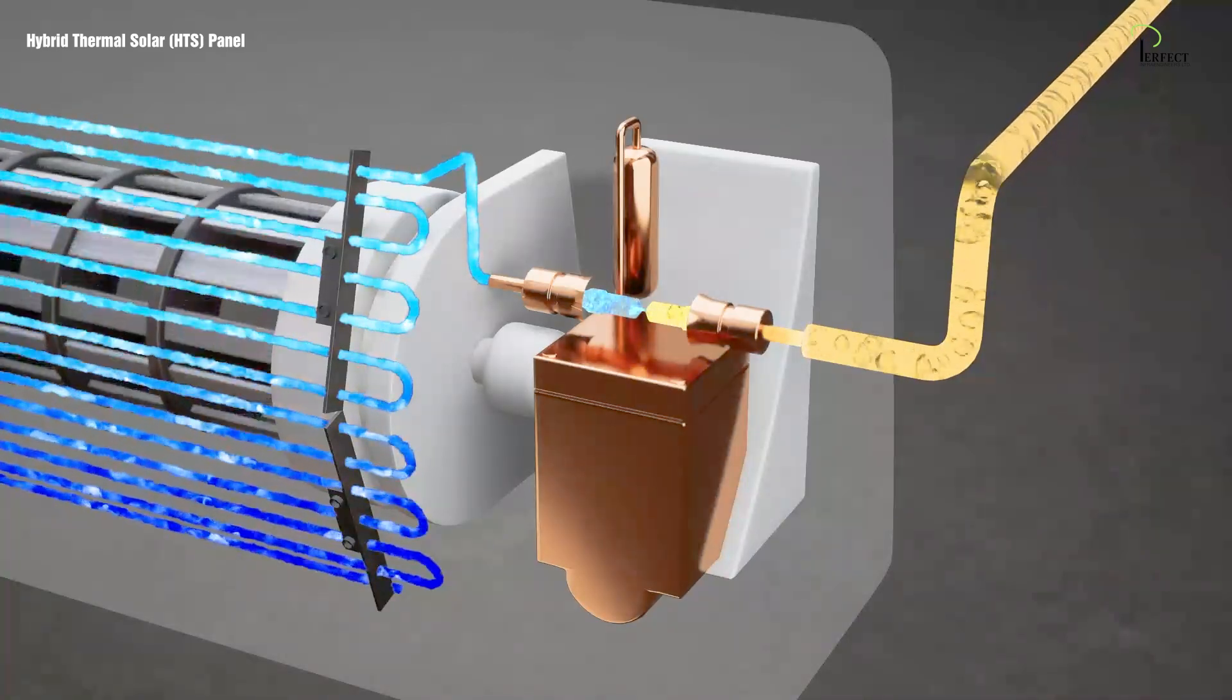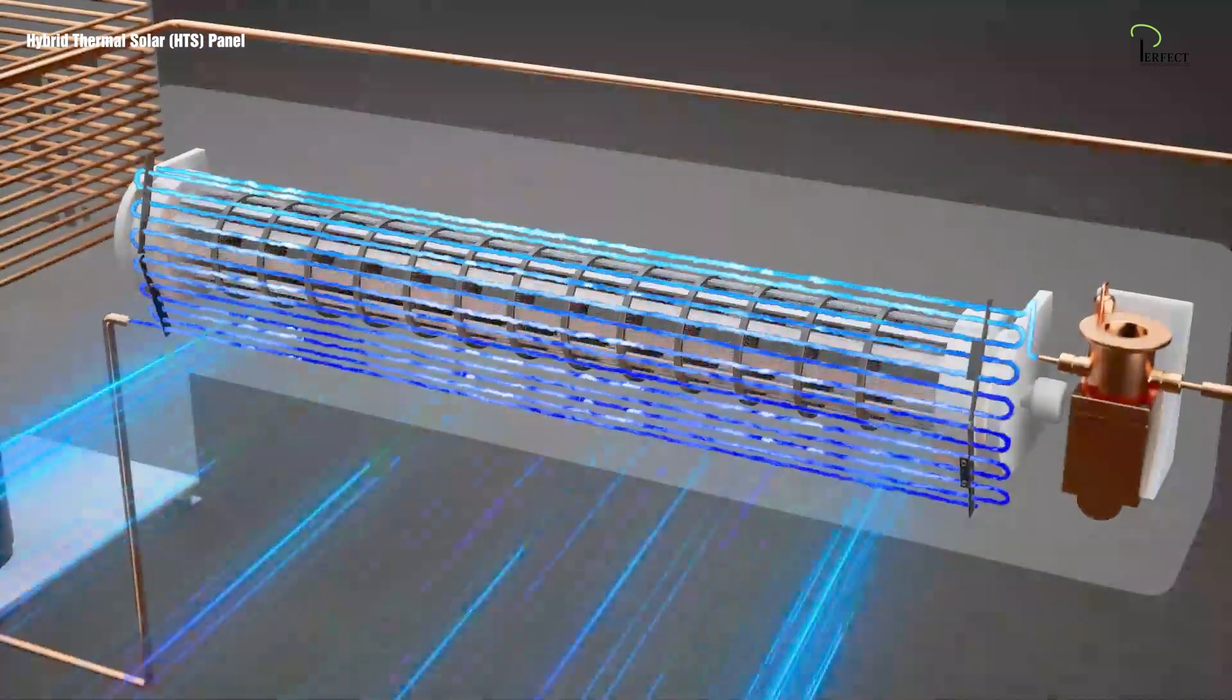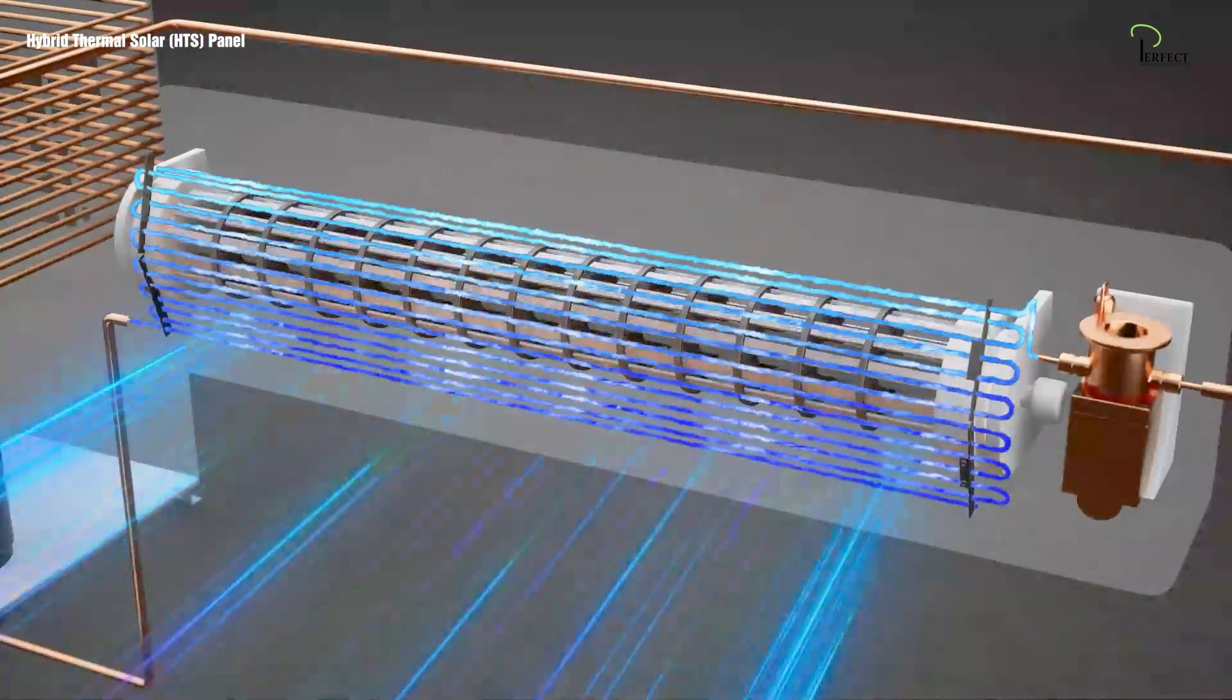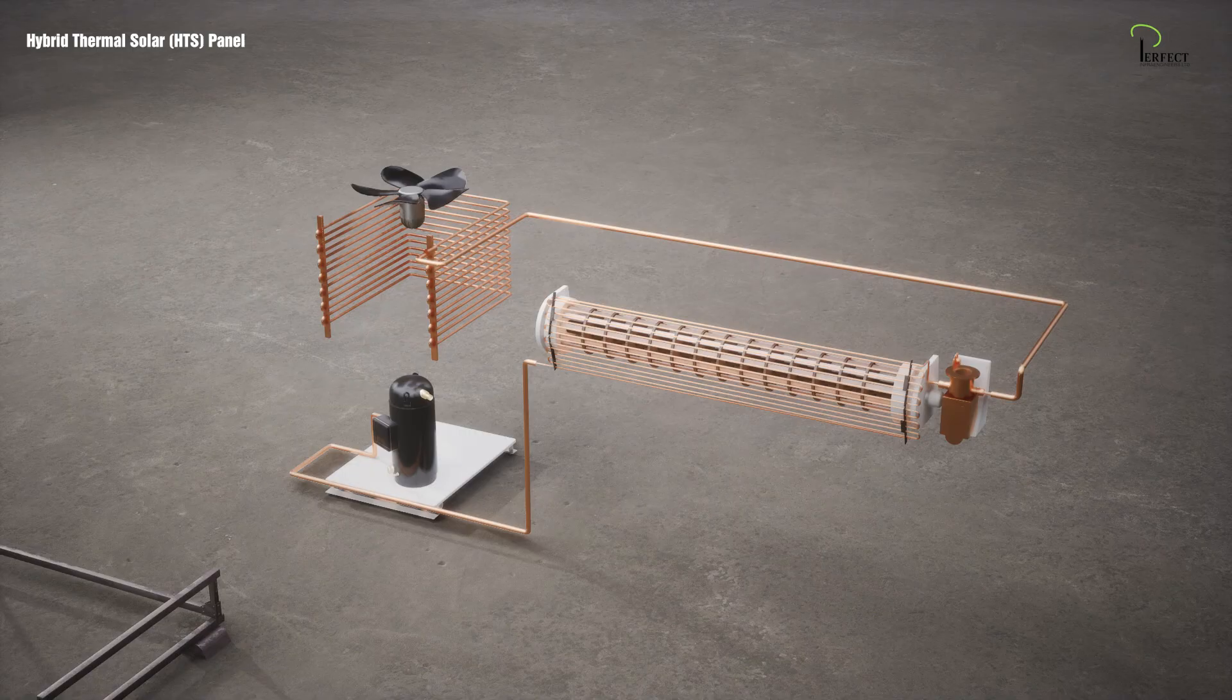Once the refrigerant reaches the inside unit of your air conditioner, the room's air passes over the copper pipes cooled by this refrigerant, cools down, and blows out of your AC vent.